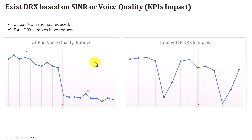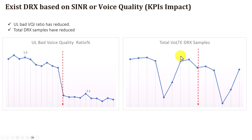After enabling this feature, improvements were observed in KPIs. The VoLTE uplink packet bad voice quality ratio from OSS KPIs improved — the ratio dropped from around 1.5% to 1.1% or less. The number of users entering DRX also decreased, confirming the feature's impact on the network.